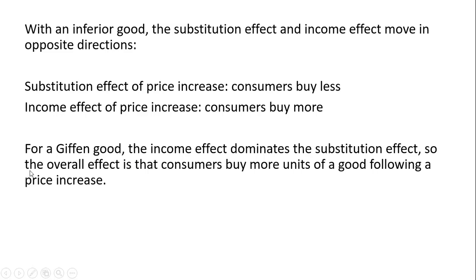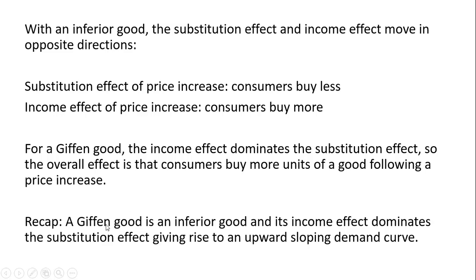So what about a Giffen good? For a good to be a Giffen good, the income effect must be larger or dominate the substitution effect. The overall effect is that consumers buy more units of a good following a price increase. To recap: a Giffen good is an inferior good, and its income effect dominates the substitution effect, giving rise to an upward sloping demand curve.